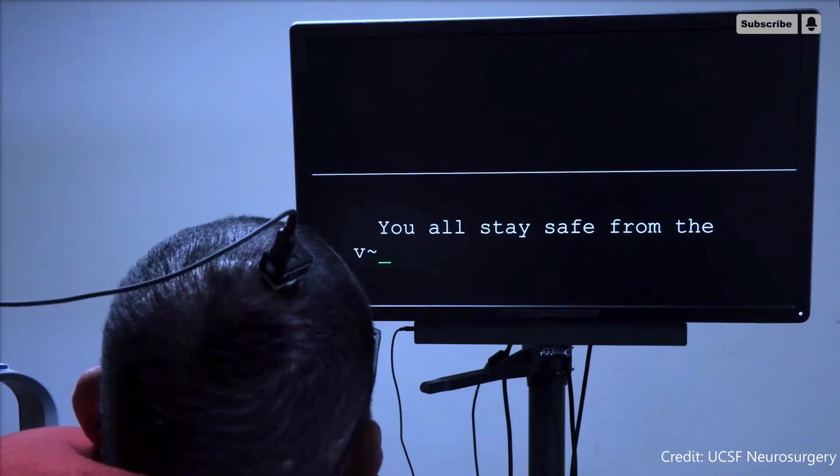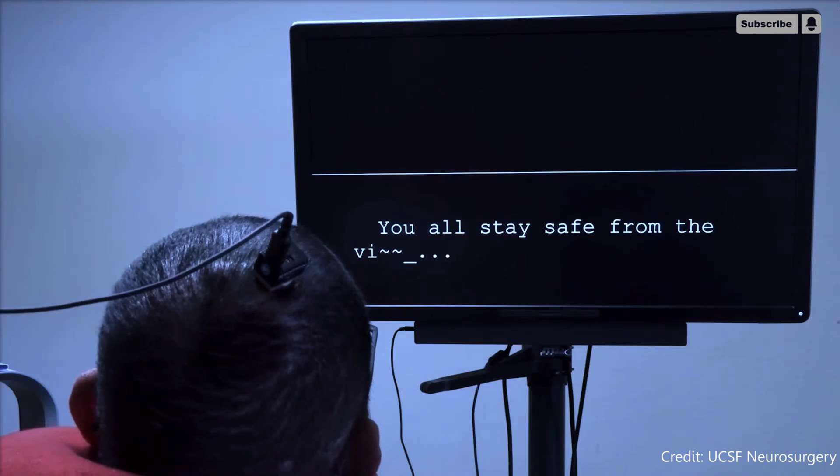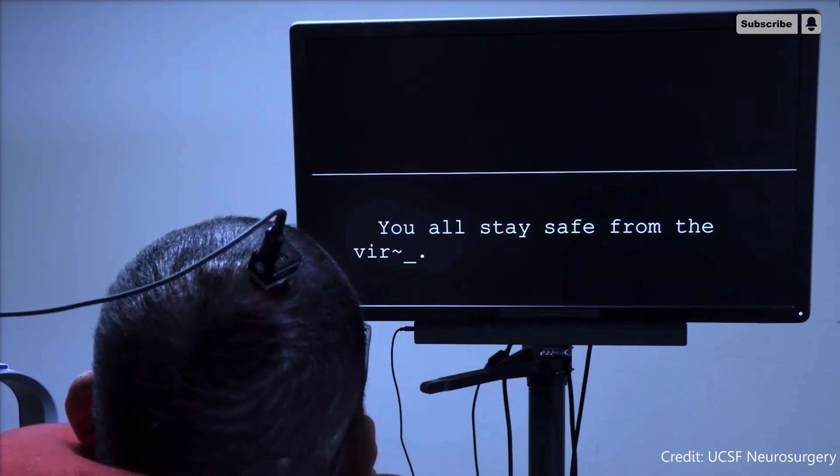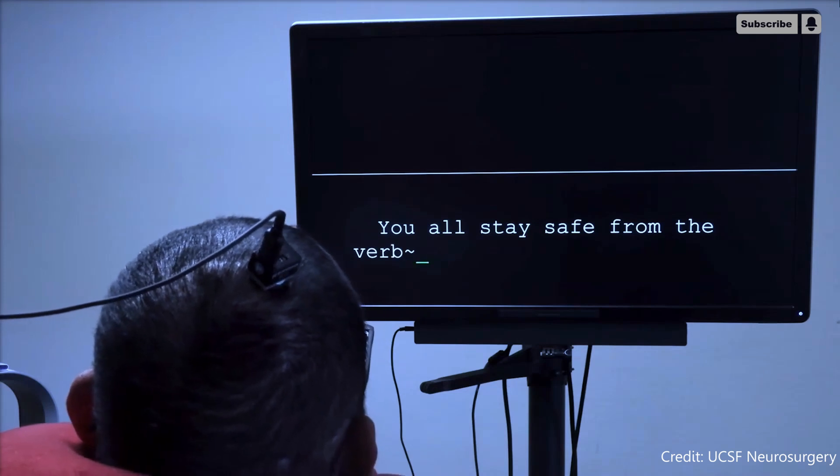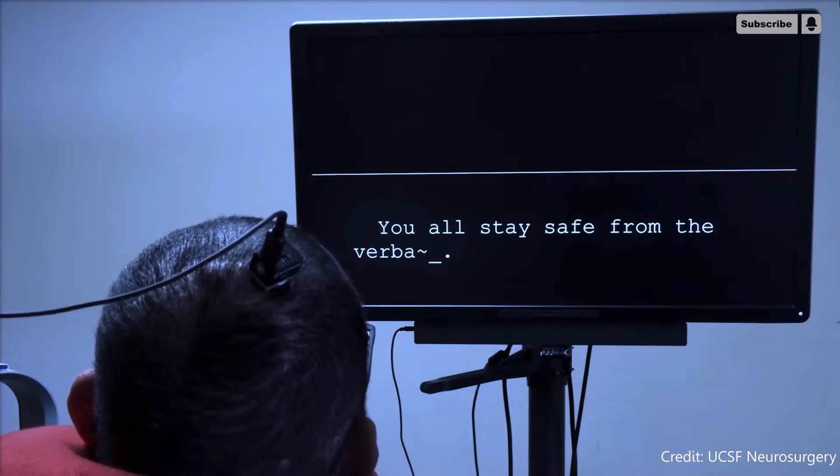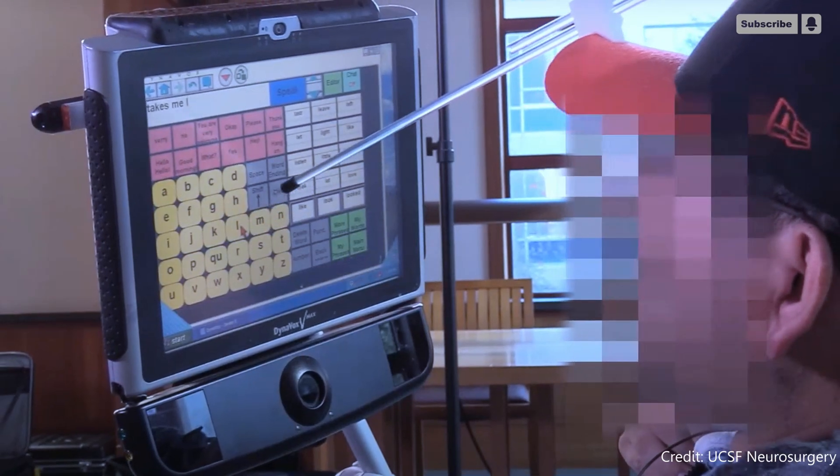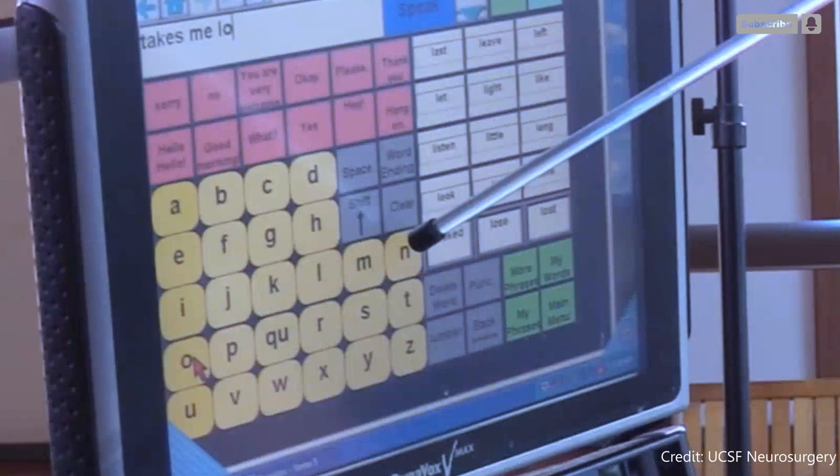The first person to take part in the brain-computer interface restoration of the arm and voice trial is identified as BRAVO1. The patient in the study had a stroke when he was 20 and is now in his late 30s. Despite having anarthria, which is the inability to speak clearly, his cognitive function was unaffected. He typically speaks by prodding at letters on a screen with a pointer that is affixed to a baseball cap.